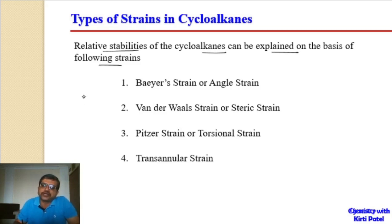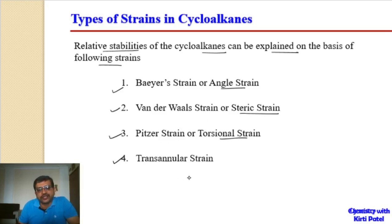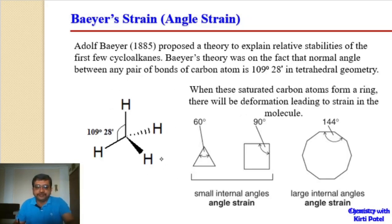There are majorly four types of strains present in cycloalkanes: Baeyer strain (also called angle strain), van der Waals strain or steric strain, Pitzer strain or torsional strain, and transannular strain. We will see each one of these one by one. First, let us see Baeyer's strain, or the angle strain.